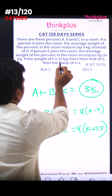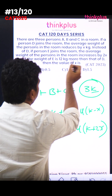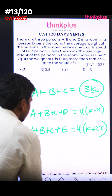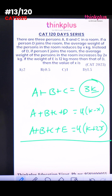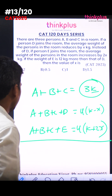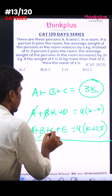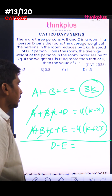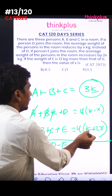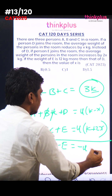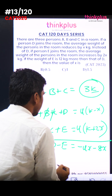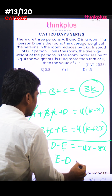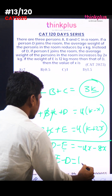E minus D equals 12. We subtract the two equations: D minus E terms cancel out, minus 4K and 4K cancel, leaving minus 4X minus 8X, which gives D minus E = minus 12X. So E minus D = 12X.